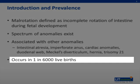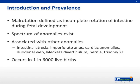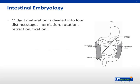Malrotation occurs in one in 6,000 live births. Midgut maturation is divided into four distinct stages: herniation, rotation, retraction, and fixation.